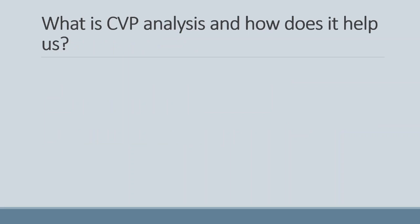So what is CVP analysis, and how does it help us? CVP is an important tool used for decision-making. It helps managers to understand and compare the consequences of different courses of action. This is achieved because CVP examines the relationship between changes in activity or units sold, changes in selling prices, changes in costs, and their effect on net profit. Thus, it allows us to predict what will happen when various changes occur in our business.